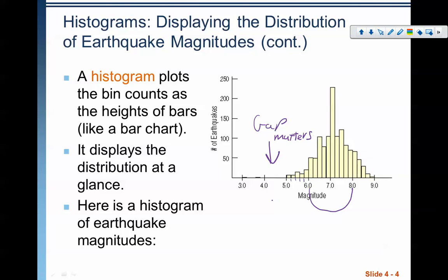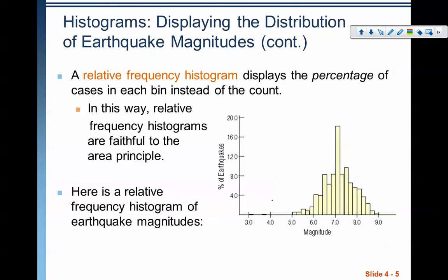So histograms, because they have a sense of order, they tell us a lot about the distribution. Now, this is a measure of counts. You can do the same thing with a relative frequency histogram. Remember, the word relative almost always means percent.